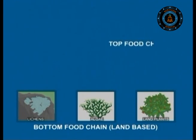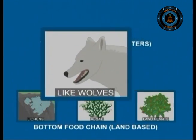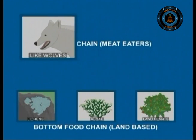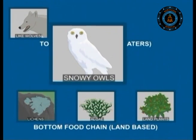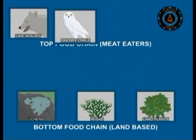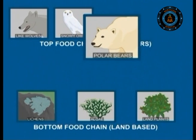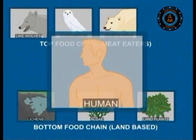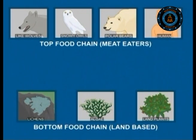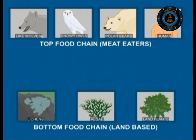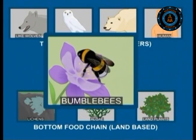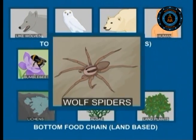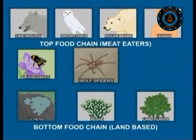At the top of this food chain are the meat-eaters, like wolves, snowy owls, polar bears and humans. In between these two comes every other living organism, from bumblebees and wolf-spiders to reindeer.